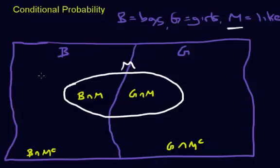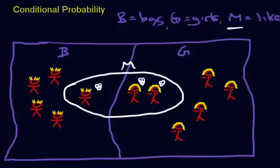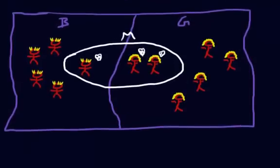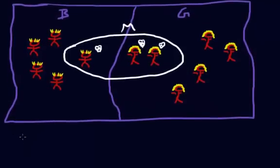To help with this example, I'm going to put figures in here to represent the boys and girls who do and do not like math. We have four boys who do not like math, one boy who does like math, two girls who like math, and two girls who do not. The hearts represent the people who like math. Now, before we get to conditional probability, I want to go over two examples first.